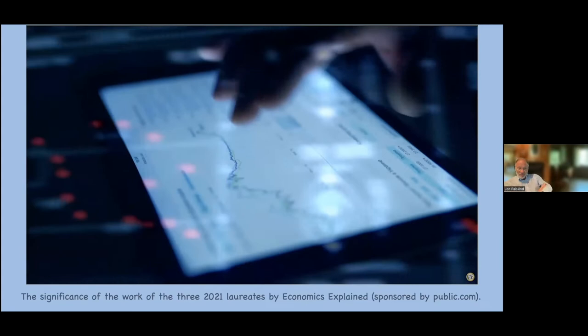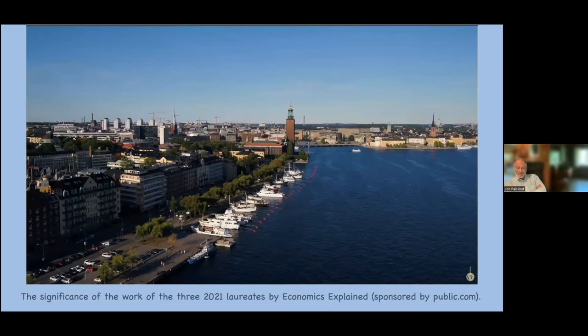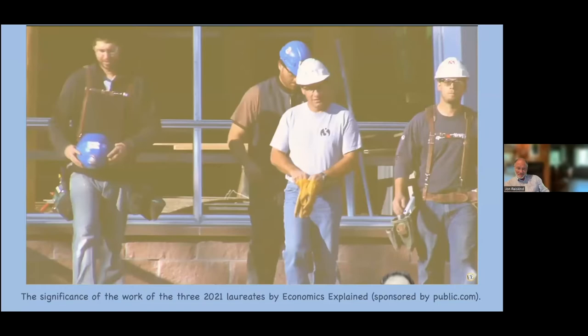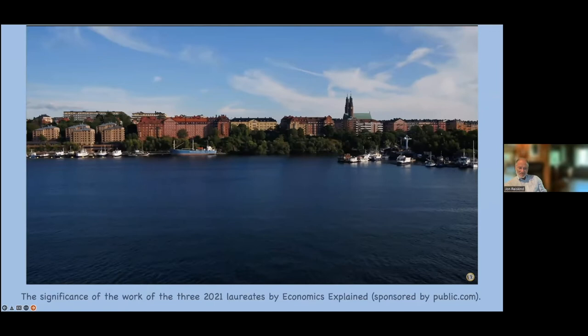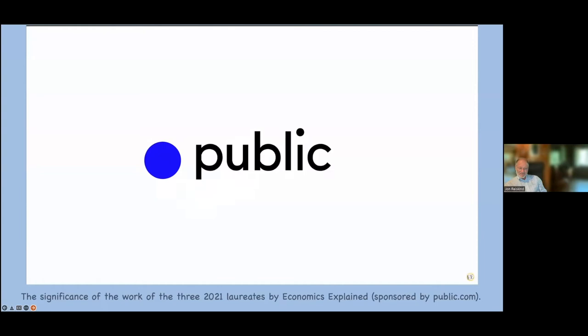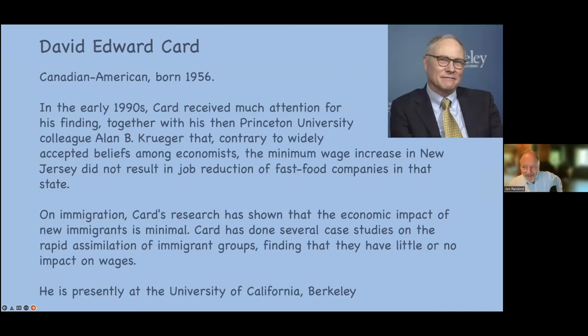Angrist's solution was to use data from conscripts from the Vietnam War. Since conscripts did not willingly volunteer, they would be devoid of the hidden variables that willing volunteers would have had. This allowed him to isolate how military service affected earnings. The results showed that conscripted veterans earned just over $400 a year less than peers who were not conscripted — a significant sum in the 1970s. The practical applications of the research these three conducted cannot be overstated; it will continue to have very real impacts on how we formulate labor laws, deal with immigration, and conduct research.